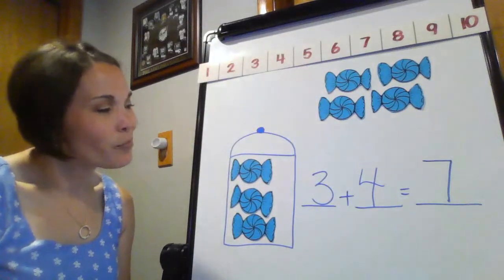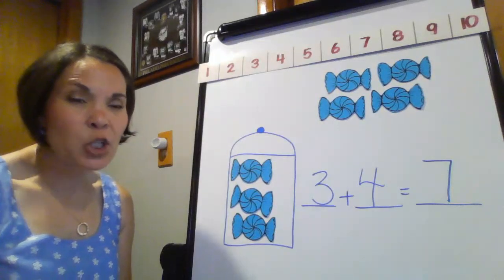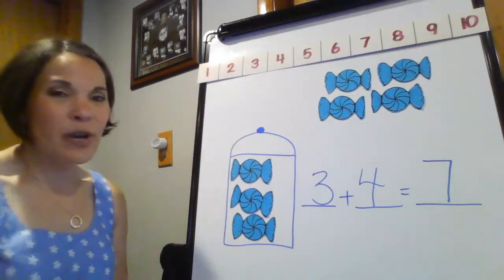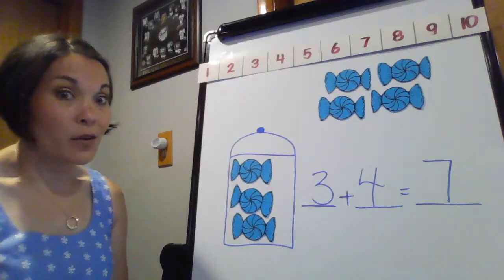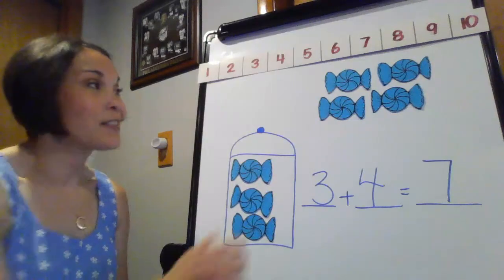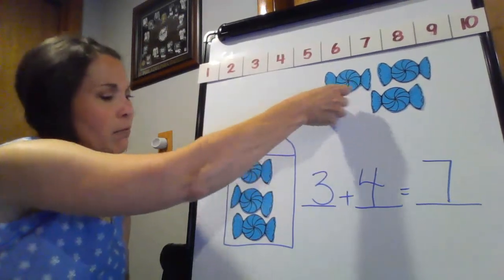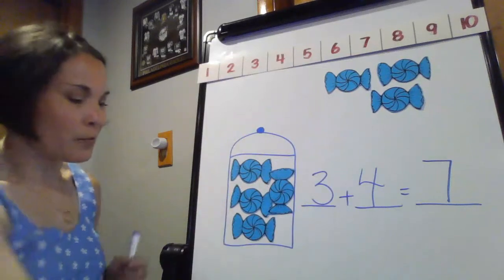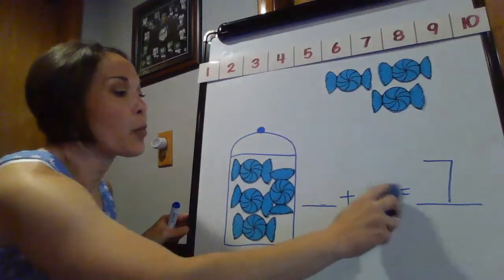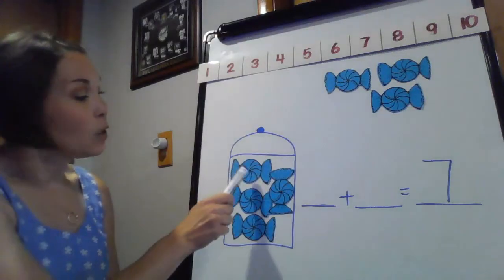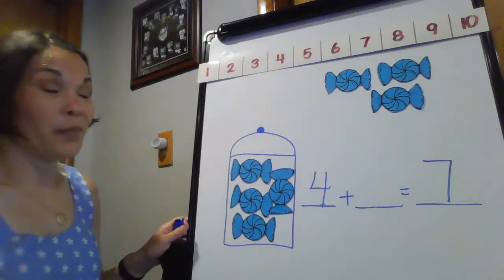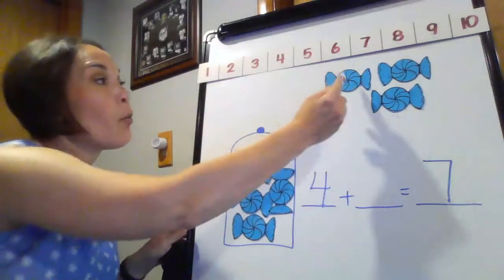I want to be a trickster here. What happens if I flip this? Maybe I don't want three in the jar — maybe I want four in the jar and leave three out. Let's see if we still get seven. So I'm not starting at three anymore; I'll have one, two, three, four in the jar, and then three left out — one, two, three.